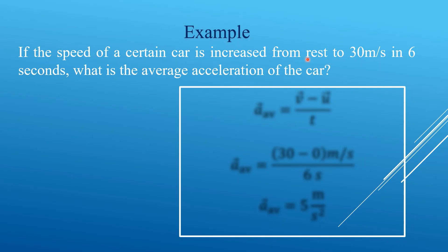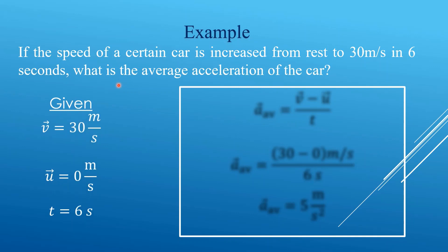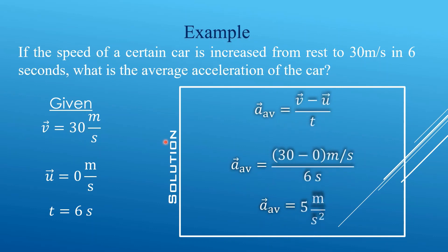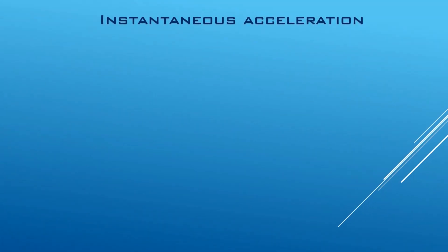The average acceleration is calculated using the average acceleration formula. The initial rate is given, and the result gives an average acceleration of 5 meters per second squared.